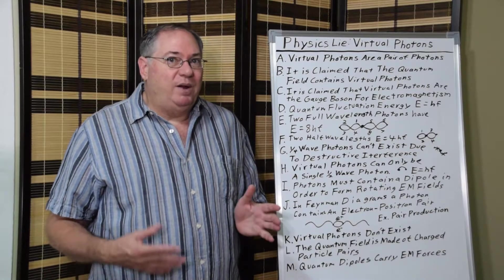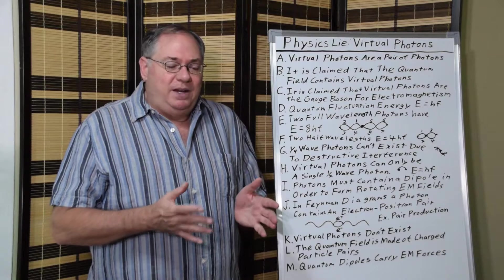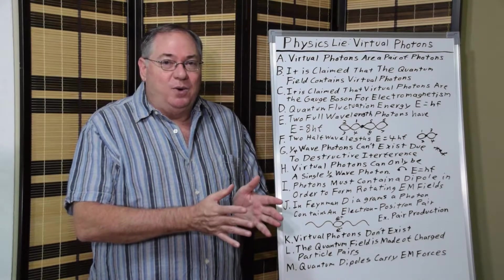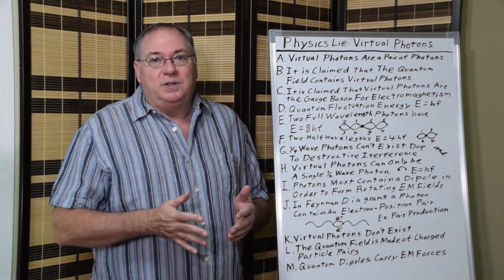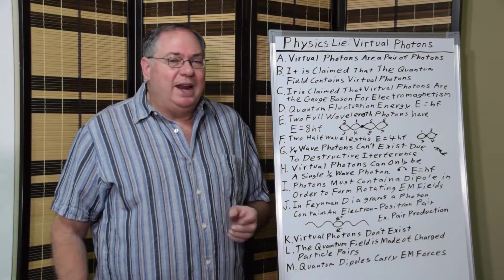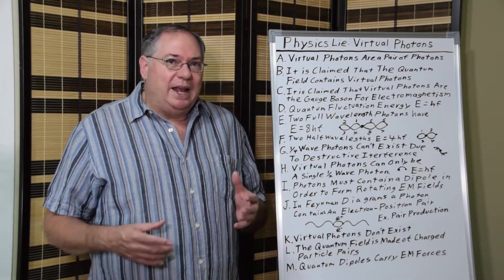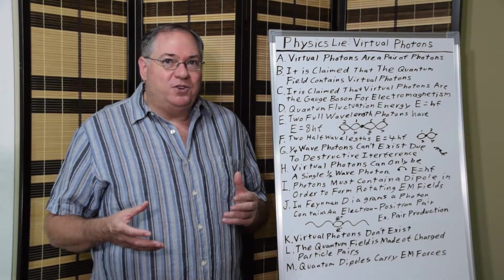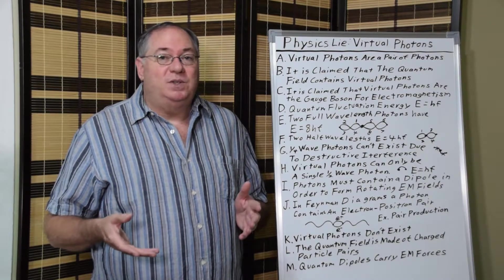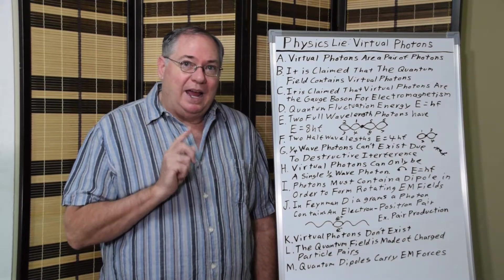So a quarter wave won't work, because even if you had it, you'd have to have it in a box to get a quarter wave to begin with so it reflects, but then it would destroy itself. And you can't have 8th waves either. So in our search to try to describe what a real virtual photon looks like, you end up with a single half-wave photon.